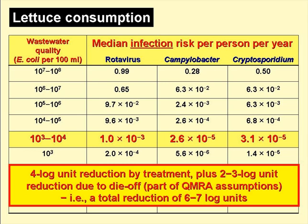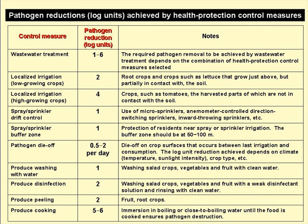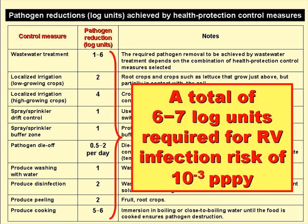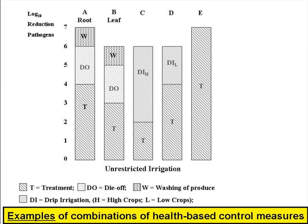Going back to the previous slide, to get to the design rotavirus infection risk of 10 to the minus 3 per person per year, we need a 4 log unit reduction by treatment — from 10 to the 7 to 10 to the 8 E. coli per 100 ml down to 10 to the 3 to 10 to the 4 per 100 ml. But the Monte Carlo QMRA calculations included a 2 to 3 log unit reduction due to die-off between the last irrigation and consumption. Therefore, the total log unit reduction required is 4 from treatment plus 2 to 3 from die-off — that is, 6 to 7 log units. Die-off is just one of several post-treatment health protection control measures, and this table lists all of these with the log unit pathogen reduction achieved by each.